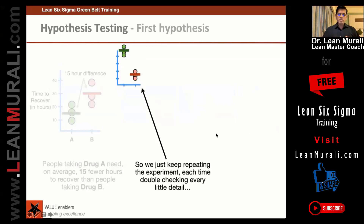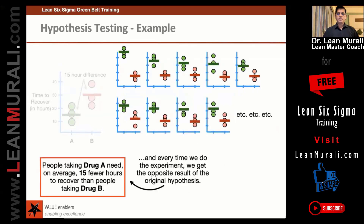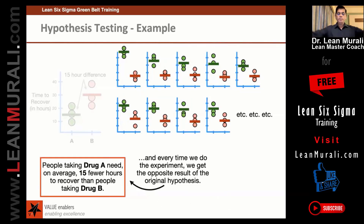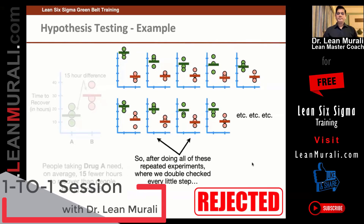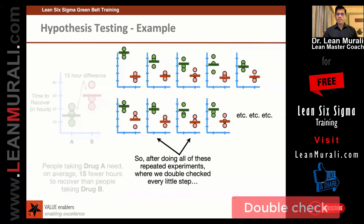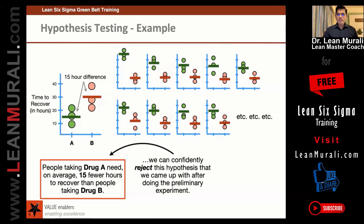So what this company did was keep on repeating the experiment, and every time they repeated it, they got the opposite result of what they originally got. What is the conclusion? We should say that the first hypothesis can be rejected. Whatever claim we made is rejected. After doing all these repeated experiments, where we double-checked every step, we can confidently reject the hypothesis that we came up with after the preliminary experiment.